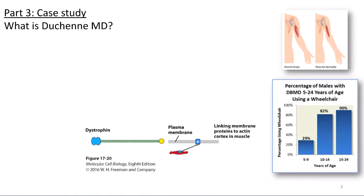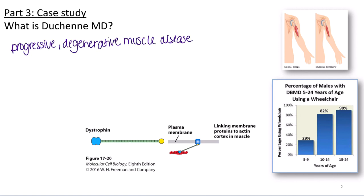Before we get into sequencing and looking at the X chromosomes for Elijah and Liam, let's first talk about what Duchenne muscular dystrophy is. There are many different types of muscular dystrophy, and Duchenne's is one of the worse forms — it's definitely more severe. We typically see about one in 3,000 to 5,000 births, and this statistic is with respect to males. There are actually many different mutations possible that can lead to muscular dystrophy.